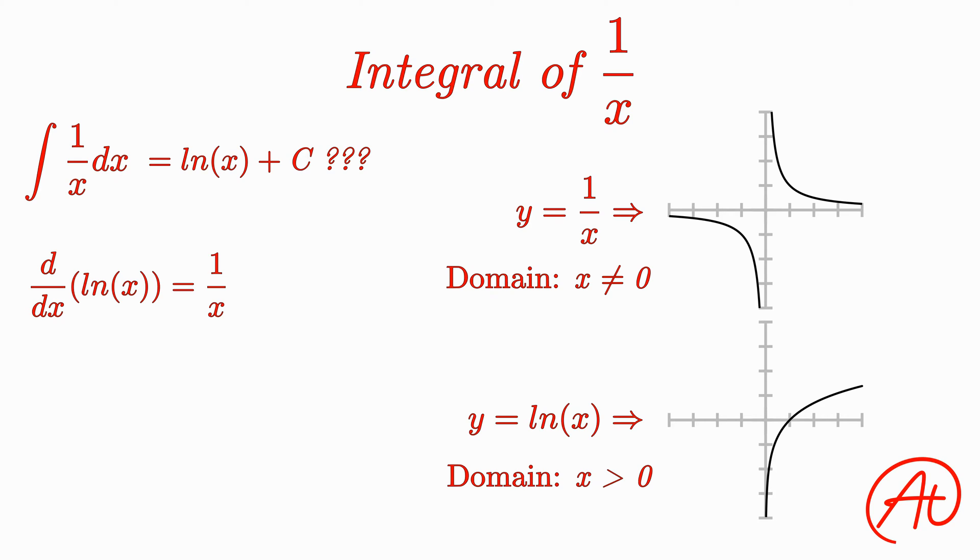In other words, how can we get it to accept negative values? Well, if instead we made the function ln of the absolute value of x, all the negative x values would be changed to positive before going into the natural log function, and the graph would end up looking like this, with the domain of x is not equal to 0, just like the 1 over x graph.